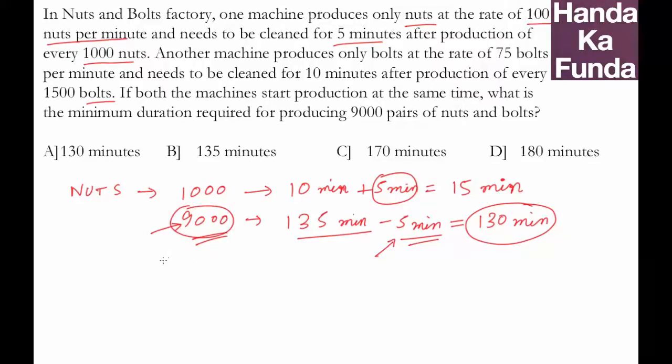Now let's use the same logic for bolts. We have a batch of 1500 bolts. How much time will it take? It takes 75 bolts per minute, so for 1500 bolts, 1500 by 75, it will take 20 minutes per batch plus a 10 minute cleaning period. So that means 30 minutes per batch of 1500.